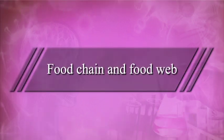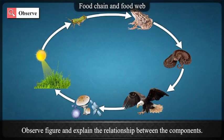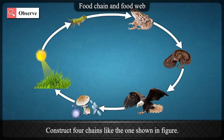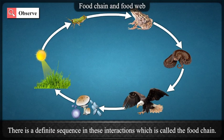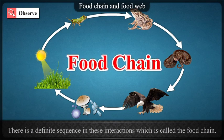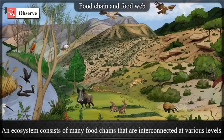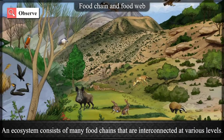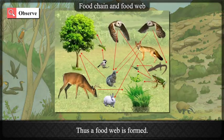Food chain and food web. Interactions go on continuously between producers, consumers and saprotrophs. There is a definite sequence in these interactions which is called the food chain. Each chain consists of 4, 5 or more links. An ecosystem consists of many food chains that are interconnected at various levels. Thus, a food web is formed.